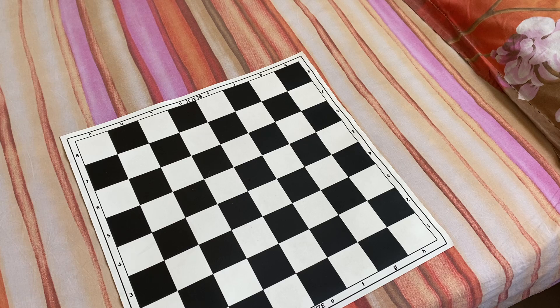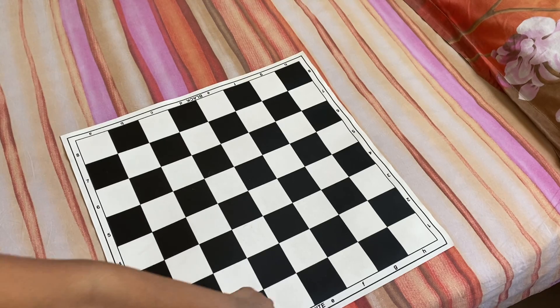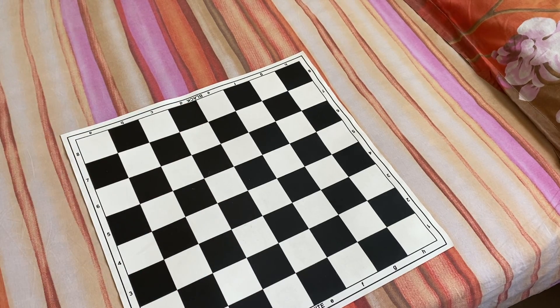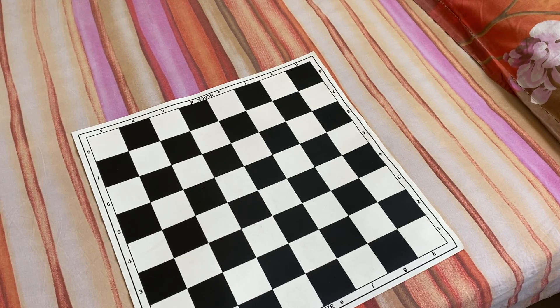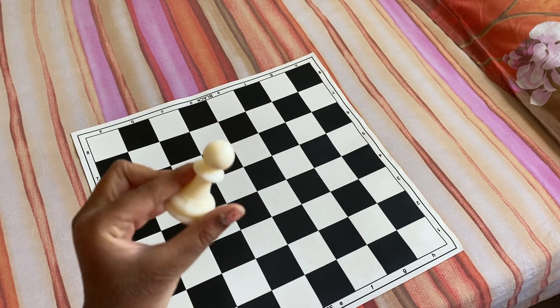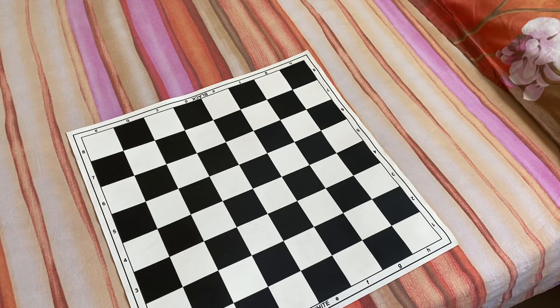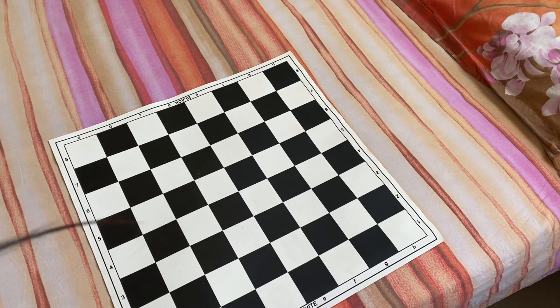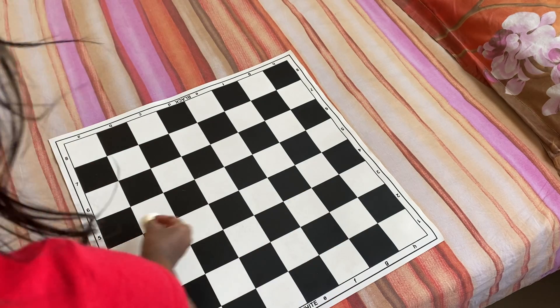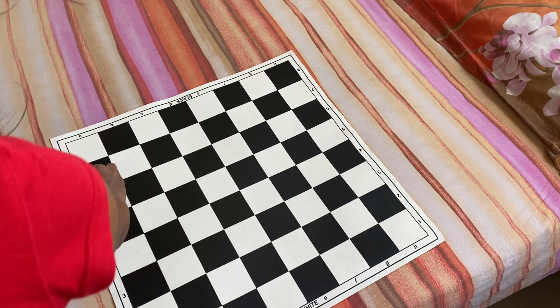So as you know, there are 2 players, the white player and the black player. So the white and black player will each have 8 pawns, which are all laid on the 2nd rank for white and 7th rank for black.